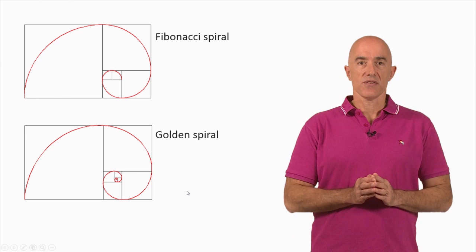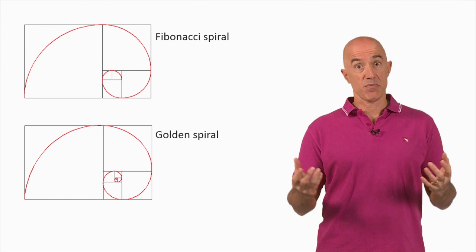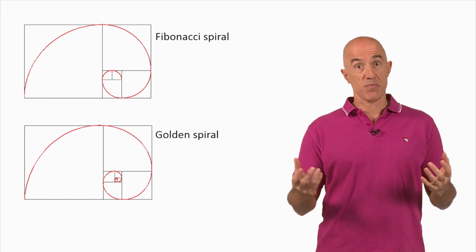So now we've learned about two spirals: the golden spiral and the Fibonacci spiral — two spirals considered among the most beautiful spirals in mathematics. I'll see you next time.